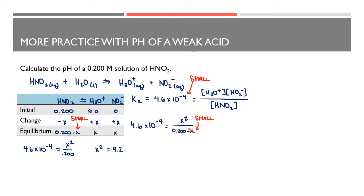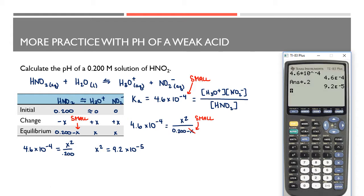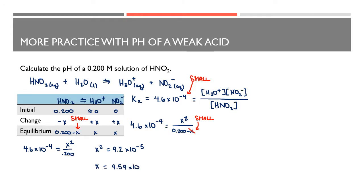So x² = 9.2 × 10⁻⁵. To solve for x, I take the square root of both sides. The square root of x² is x, and the square root of 9.2 × 10⁻⁵ is 9.59 × 10⁻³. That's what x is equal to. Now keep in mind, x = 9.59 × 10⁻³, but that doesn't mean all concentrations equal that — I would substitute that value back into my ICE table.